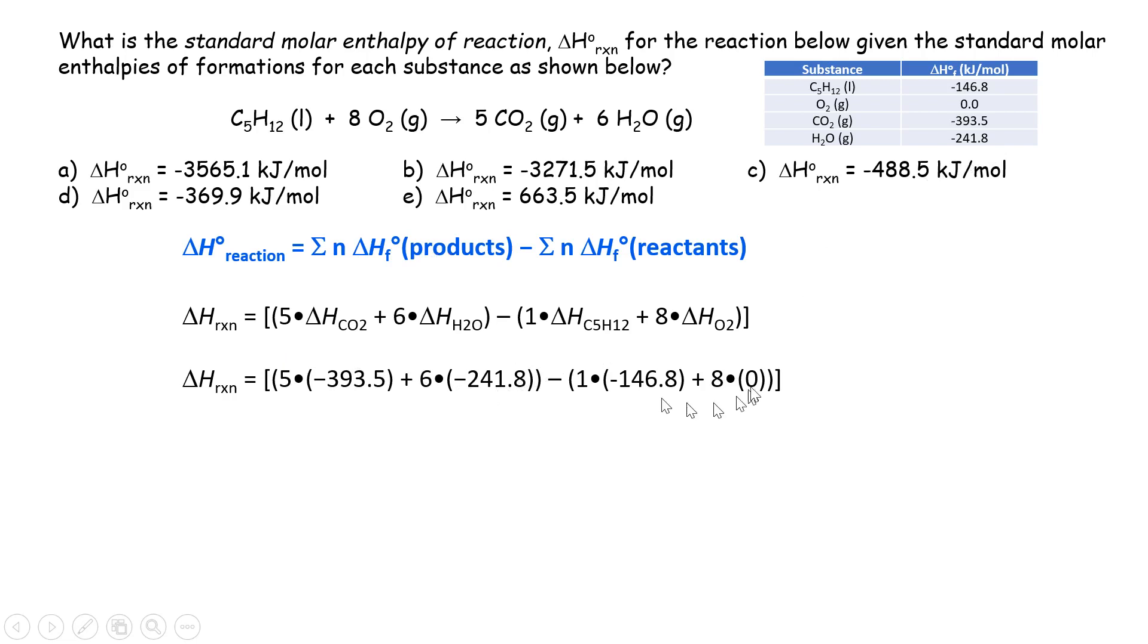Then subtracted by one times negative 146.8, that's actually pentane's delta H zero f. And then eight times O2 in the gas phase. Actually that's the more stable state for oxygen, so the delta H zero f should be zero. But we still write that down right here.